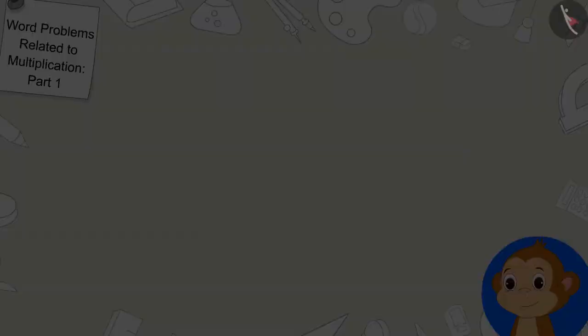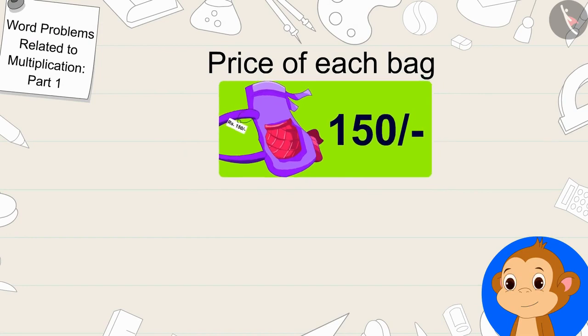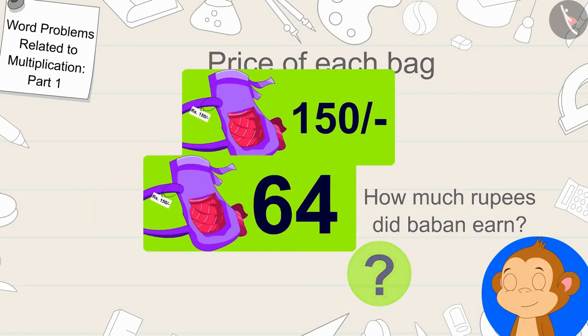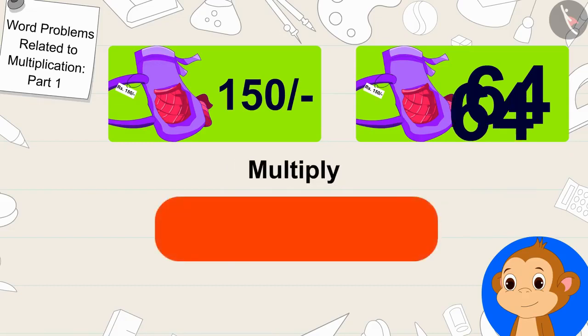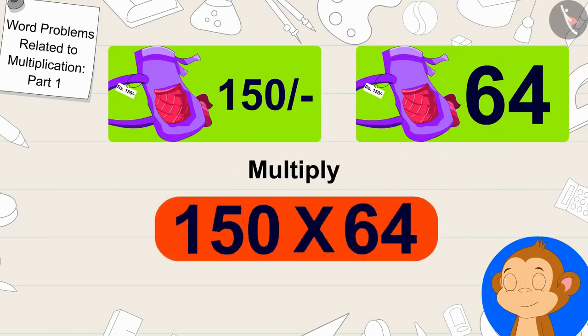Babban sells each bag for 150 rupees. To find out how many rupees Babban earned by selling 64 bags, we only have to multiply 64 bags by 150 rupees. Children, can you tell what the answer will be?